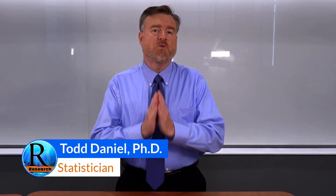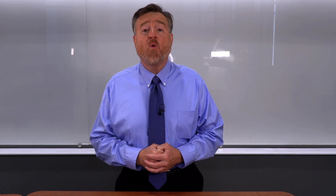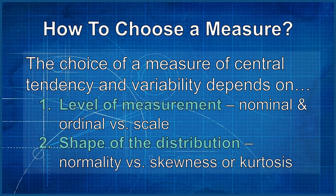Because central tendency and variability are so central to what we will be doing as we learn statistics, it's important that we understand how to choose a measure of central tendency and variability for our distribution. When choosing, my first piece of advice is to consider the level of measurement: are you working with nominal and ordinal categorical data, or with interval-ratio scale continuous data? That will be the first determinant.